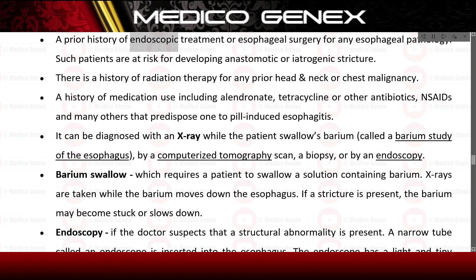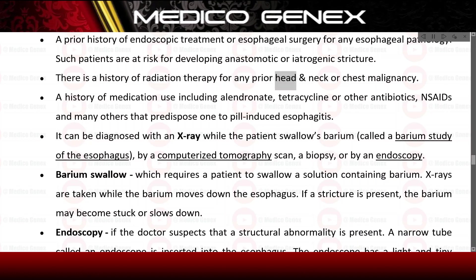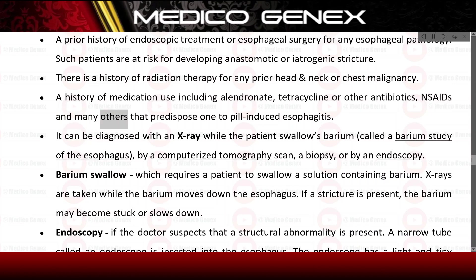A prior history of endoscopic treatment or esophageal surgery places patients at risk for developing anastomotic or iatrogenic stricture. A history of radiation therapy for prior head and neck or chest malignancy is also relevant, as is medication use including alendronate, tetracycline or other antibiotics, and NSAIDs, which predispose one to pill-induced esophagitis.